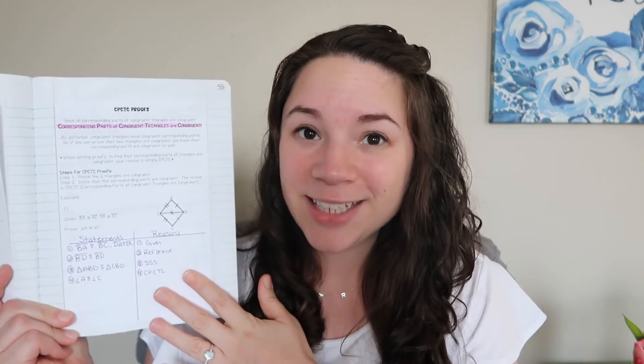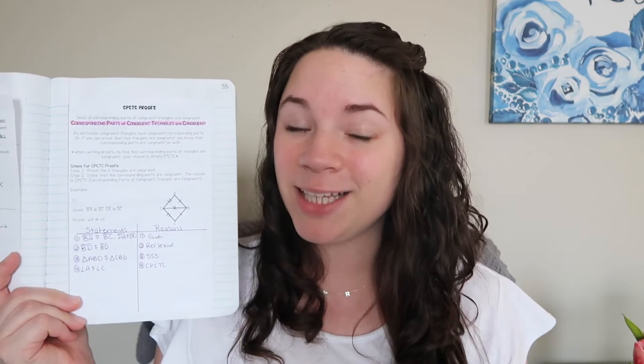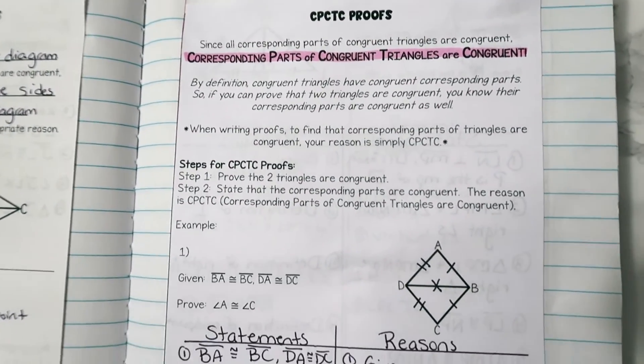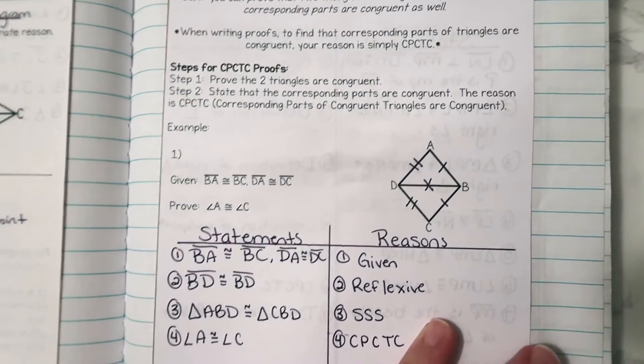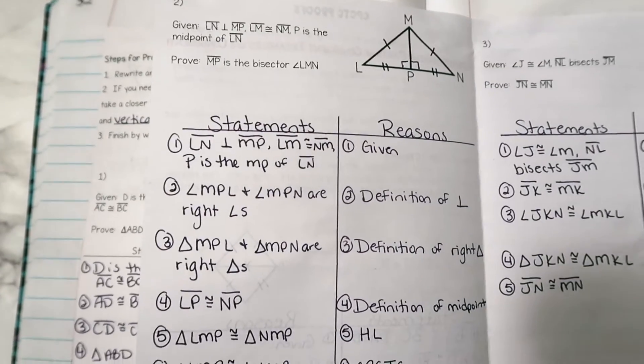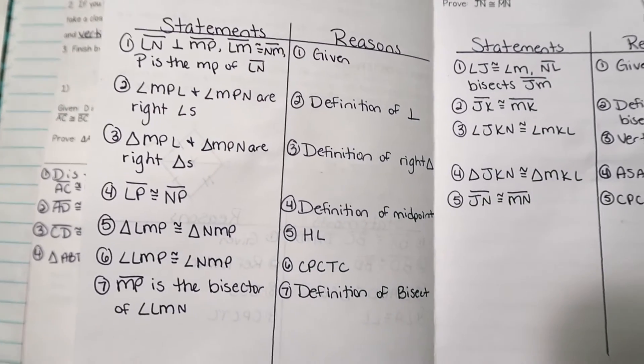Flipping back to last year's notebook — our next lesson will be CPCTC proofs: corresponding parts of congruent triangles are congruent. Students build on what they already know and we do proof cards with this as well over the next few days.